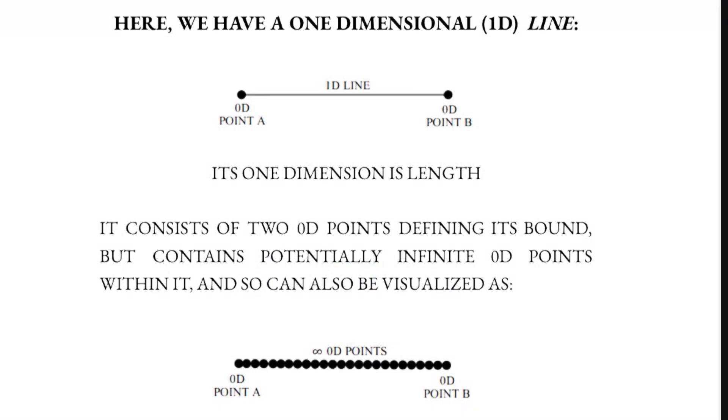Here we have a one dimensional line. Its one dimension is length. It consists of two zero-dimensional points defining its bound, but contains potentially infinite zero-dimensional points within it, and so can also be visualised as such.